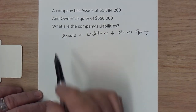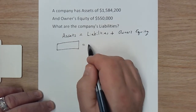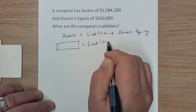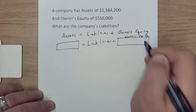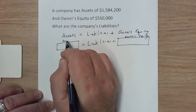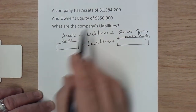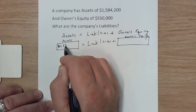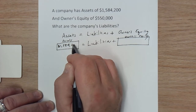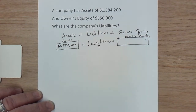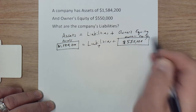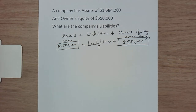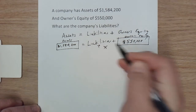All we need to do is start filling in this information. I like to use some boxes — you don't have to, but I like to use them and label them. We know that the assets are $1,584,200. We don't know what the liabilities are, so I'll put a question mark there. We're also told that the owner's equity is $550,000. If you notice, this starts to look like an algebraic equation — think of the liabilities as your x, something you need to solve for.